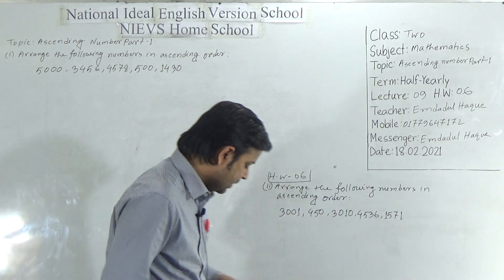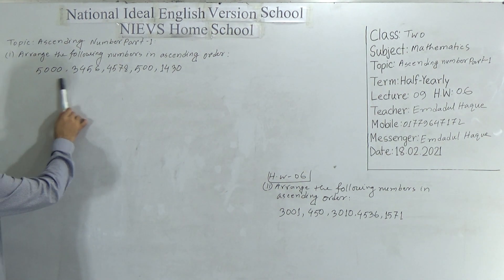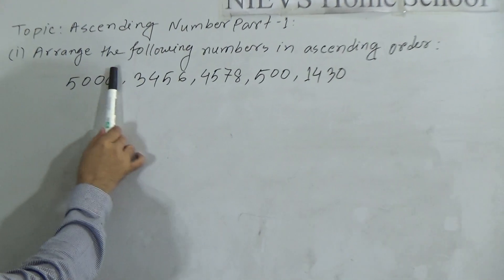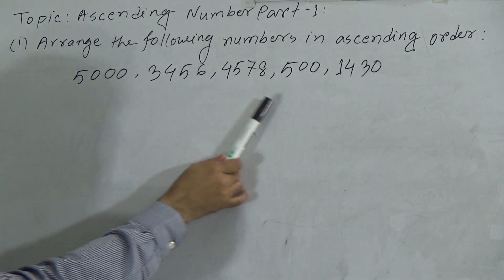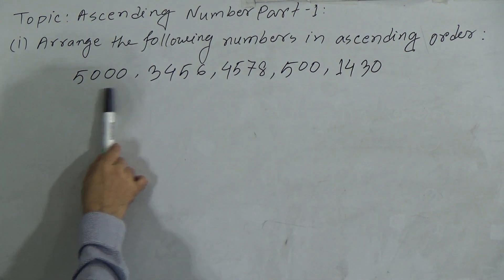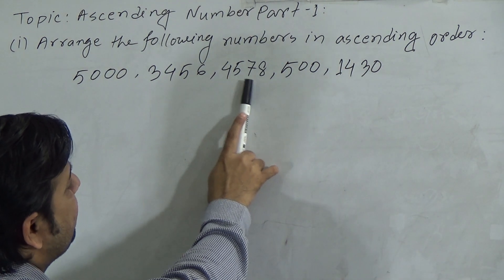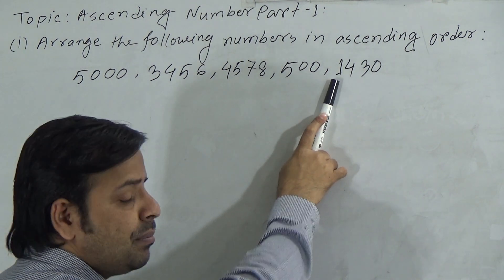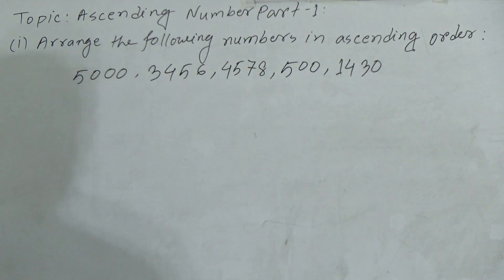Now we are going to start our class. Here five numbers are given and we have to arrange them in ascending order. The question is: arrange the following numbers in ascending order. The first number is 5000, the second number is 3456, the third number is 4578, the fourth number is 500, and the fifth number is 1430.